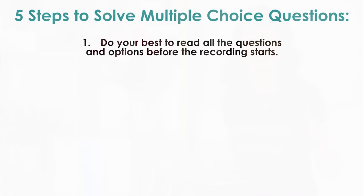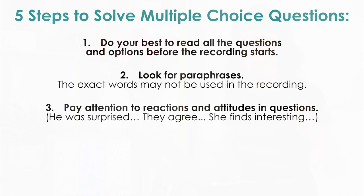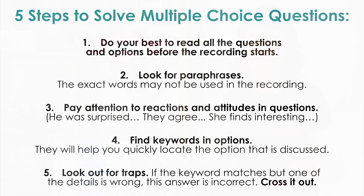To help you memorize everything we've discussed, here are my five steps to solving multiple choice questions. One: do your best to read all questions and options before the recording starts. Two: look for paraphrases — the exact words may not be used in the recording. Three: pay attention to reactions and attitudes in questions — 'he was surprised,' 'they agree,' 'she finds interesting.' Four: find keywords in options to quickly locate what's being discussed. Five: look out for traps — if the keyword matches but one detail is wrong, this answer is incorrect, so cross it out.